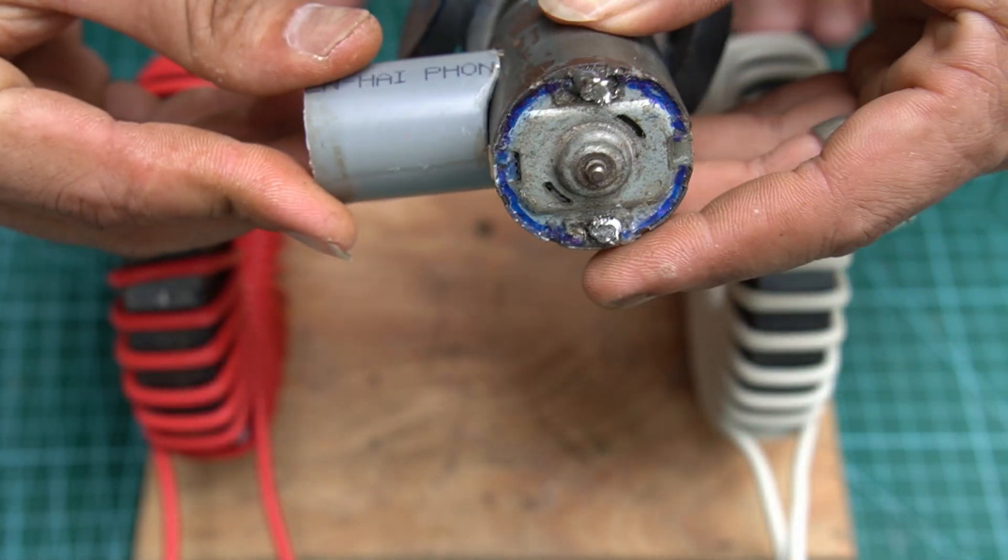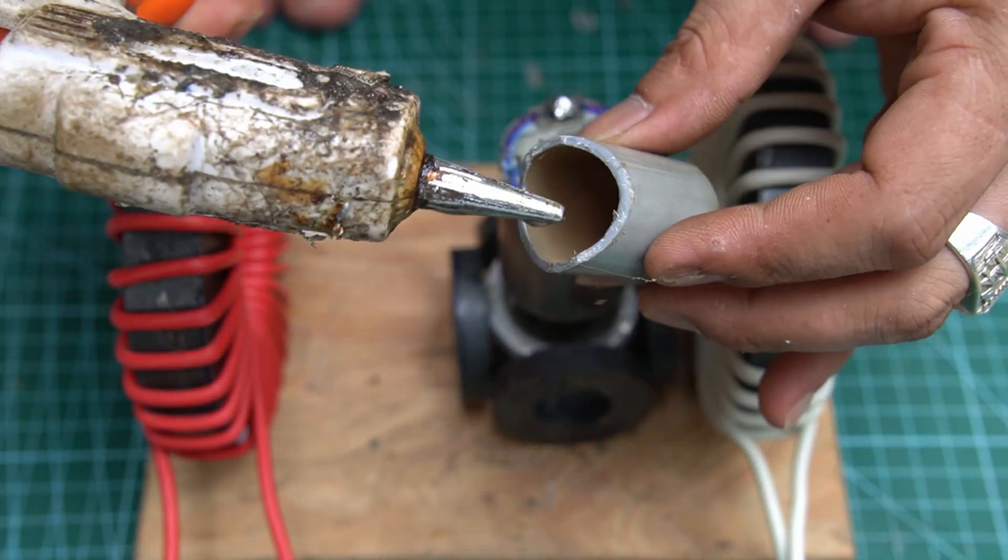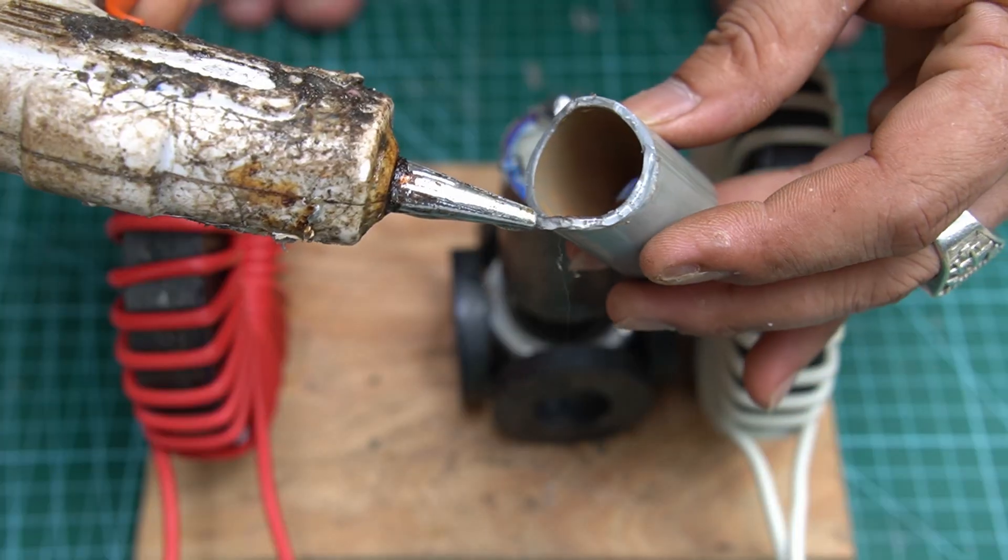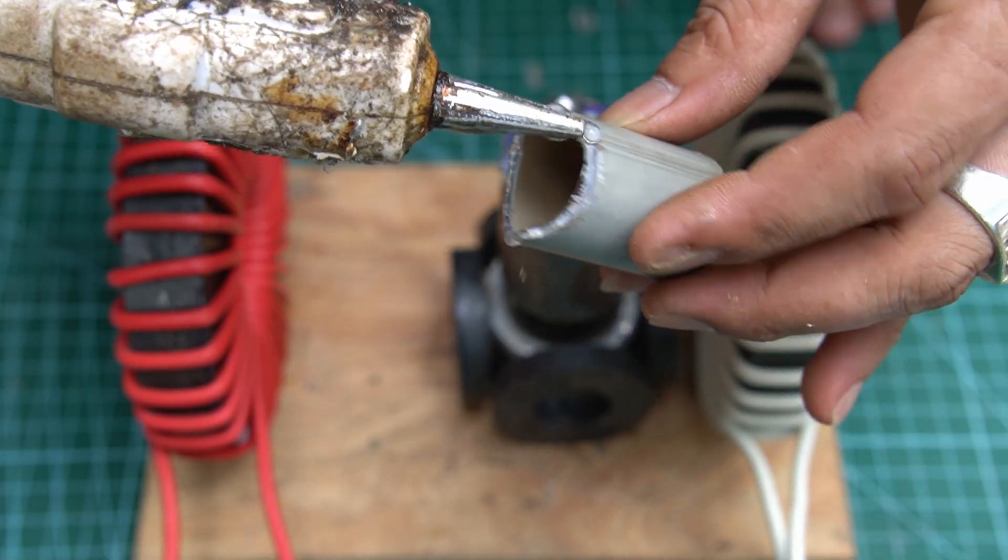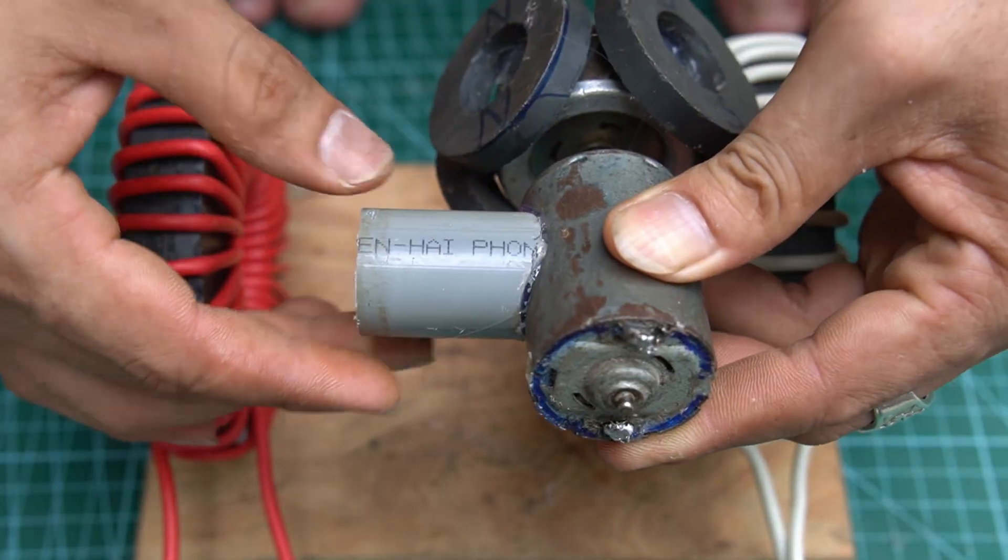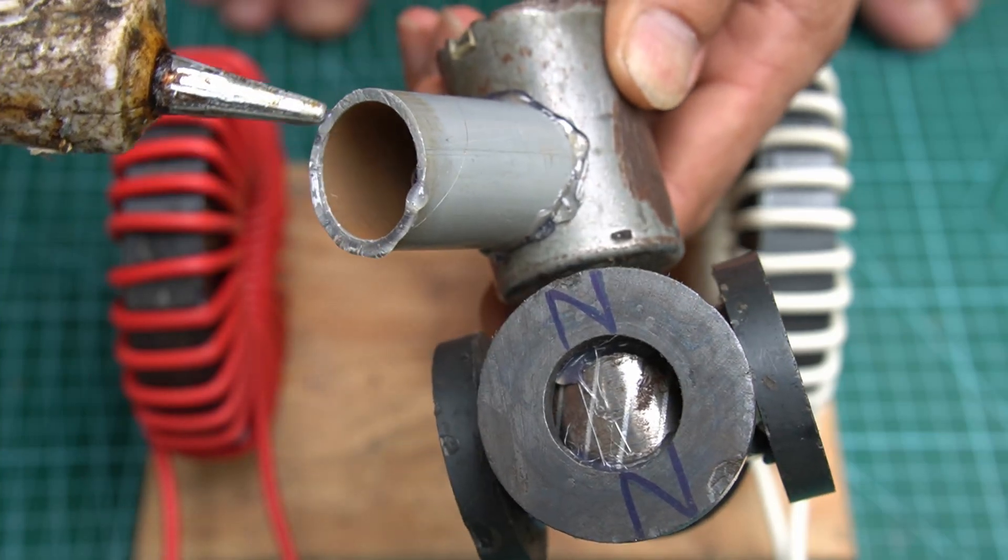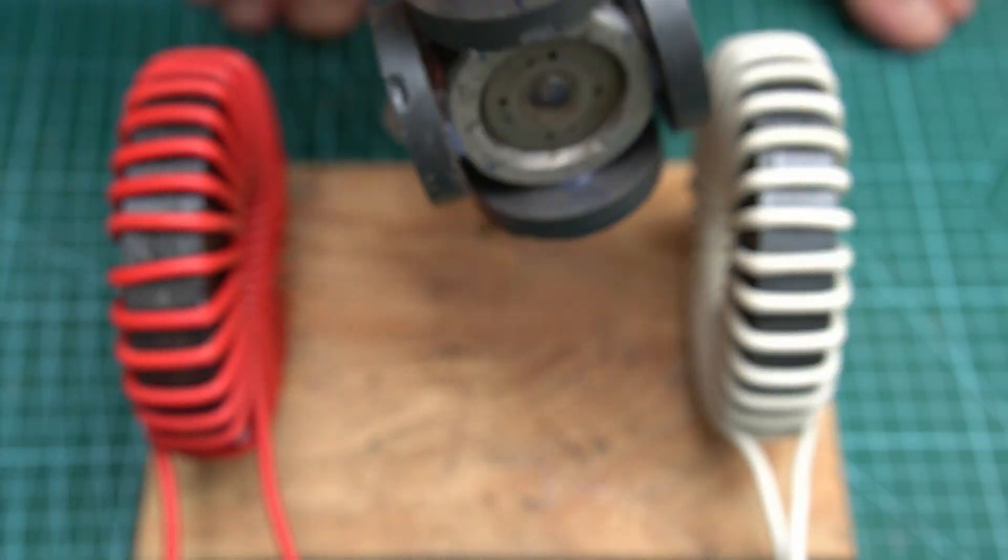I will make a leg for this motor out of a piece of PVC pipe, then use special glue to attach it to the motor body. Continue using specialized glue to attach the motor legs to the wooden base.